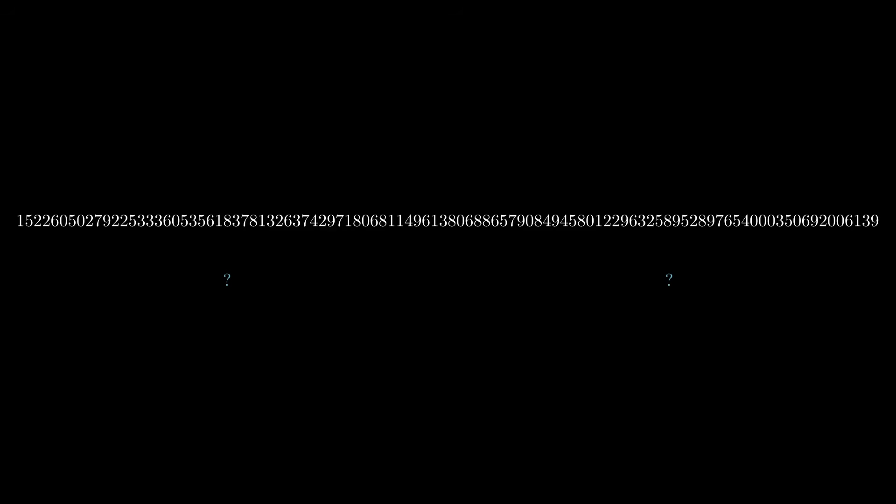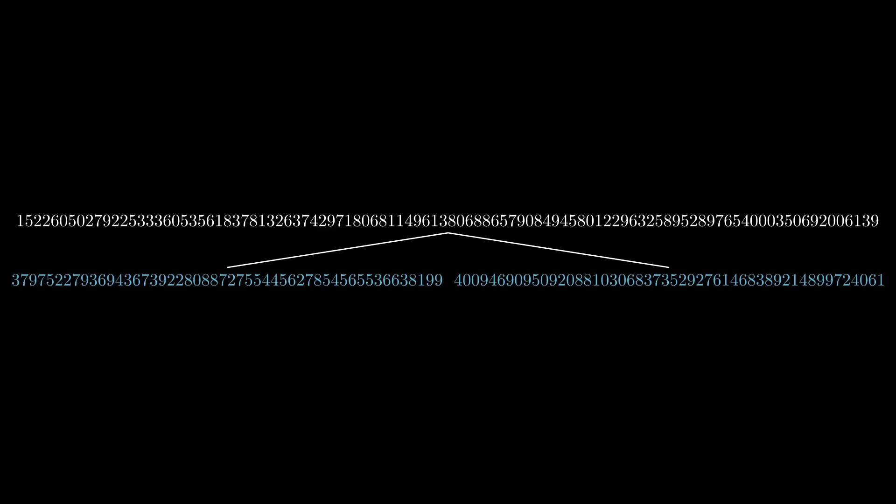After an intensive computer search, researchers found these two 50-digit primes, and they fit the bill. Multiply them together, and you get the original number. But are these the same two primes the laptop used to create the number in the first place? How can we be sure when the only record was destroyed?